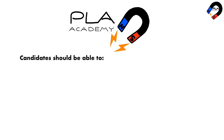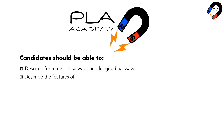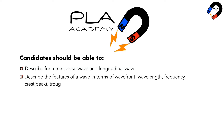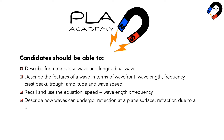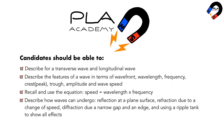Candidates should be able to describe transverse waves and longitudinal waves, describe the features of a wave in terms of wavefront, wavelength, frequency, crest, peak, trough, amplitude, and wave speed, recall and use the equation speed equals wavelength times frequency, and describe how waves can undergo reflection at a plane surface, refraction due to a change of speed, diffraction due to a narrow gap and an edge, using a ripple tank to show all effects.